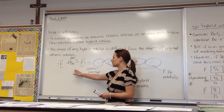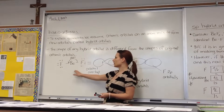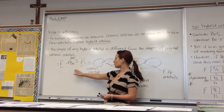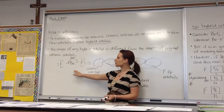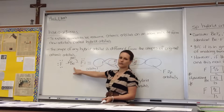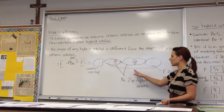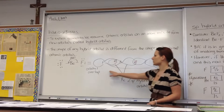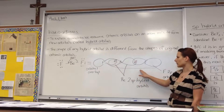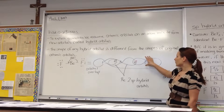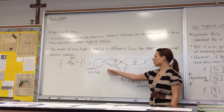If we look at beryllium difluoride, we know from our Lewis dot diagram and from the VSEPR theory diagram that it is a linear structure with a 180-degree bond angle. In terms of orbital overlap — which is the bonding situation we're looking at — the fluorines maintain and keep their 2P orbitals.